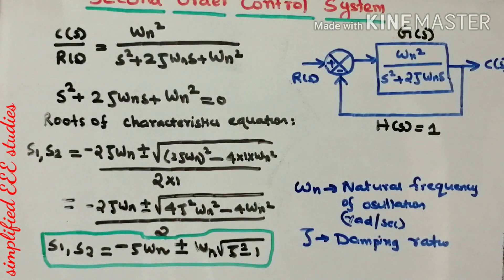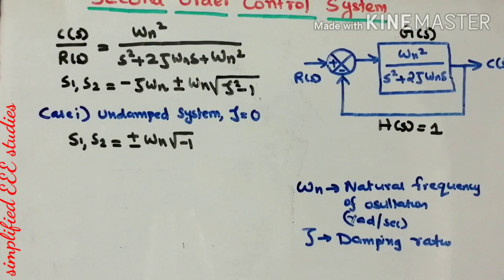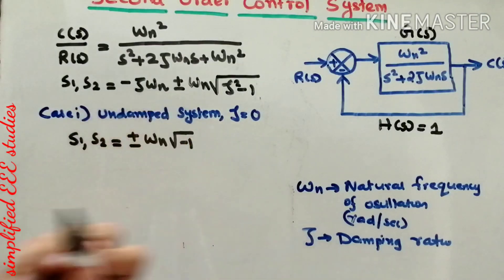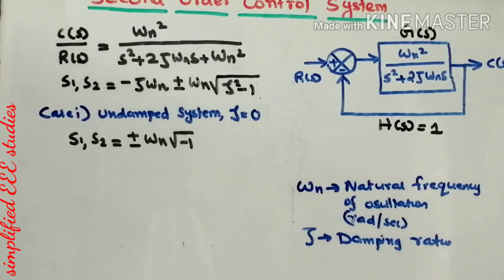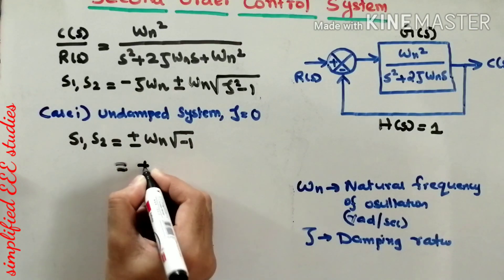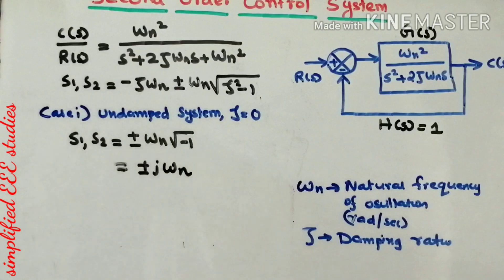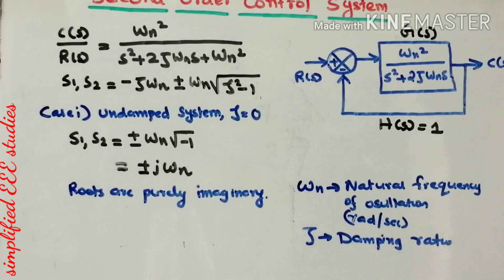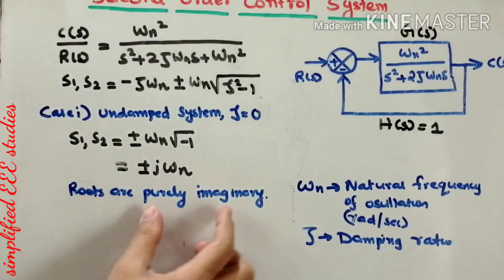For Case 1, the undamped system where zeta equals 0: substituting, the real part vanishes, and the remaining term is ωn times square root of minus 1, which equals ±j·ωn. The roots are purely imaginary. For undamped systems, the roots are purely imaginary — useful to remember for multiple choice questions.